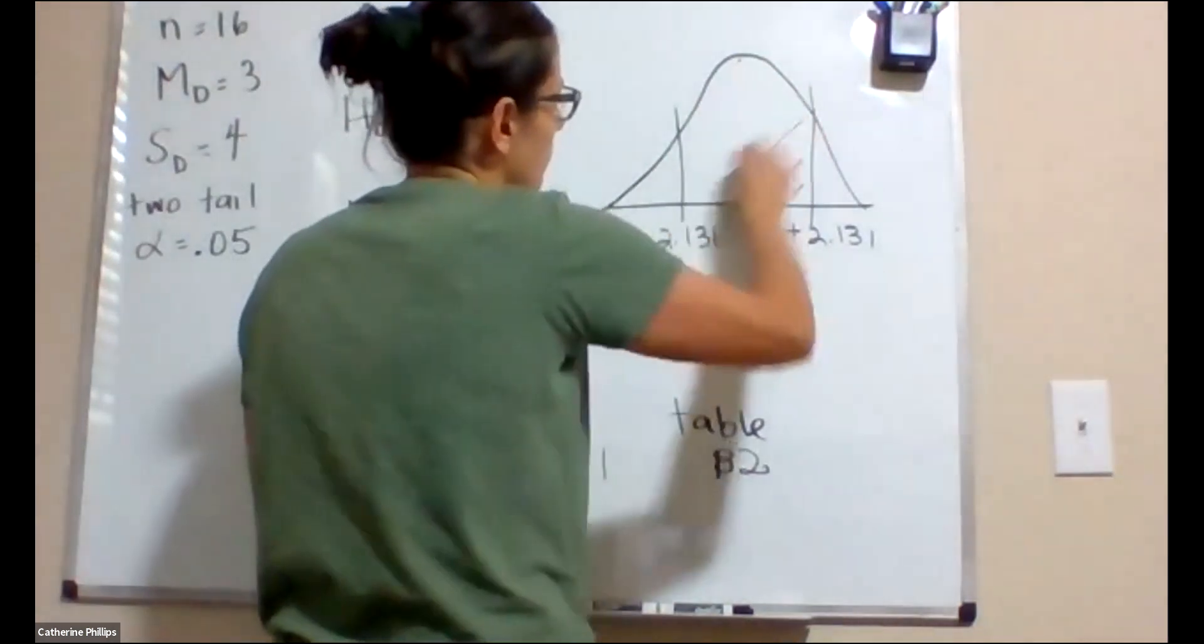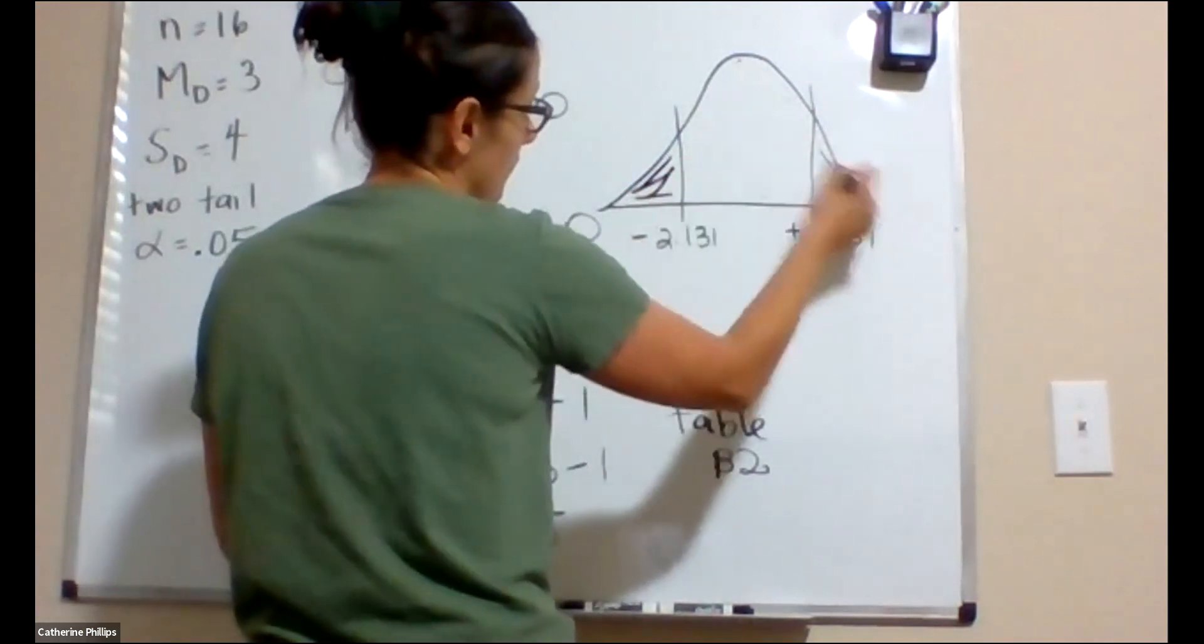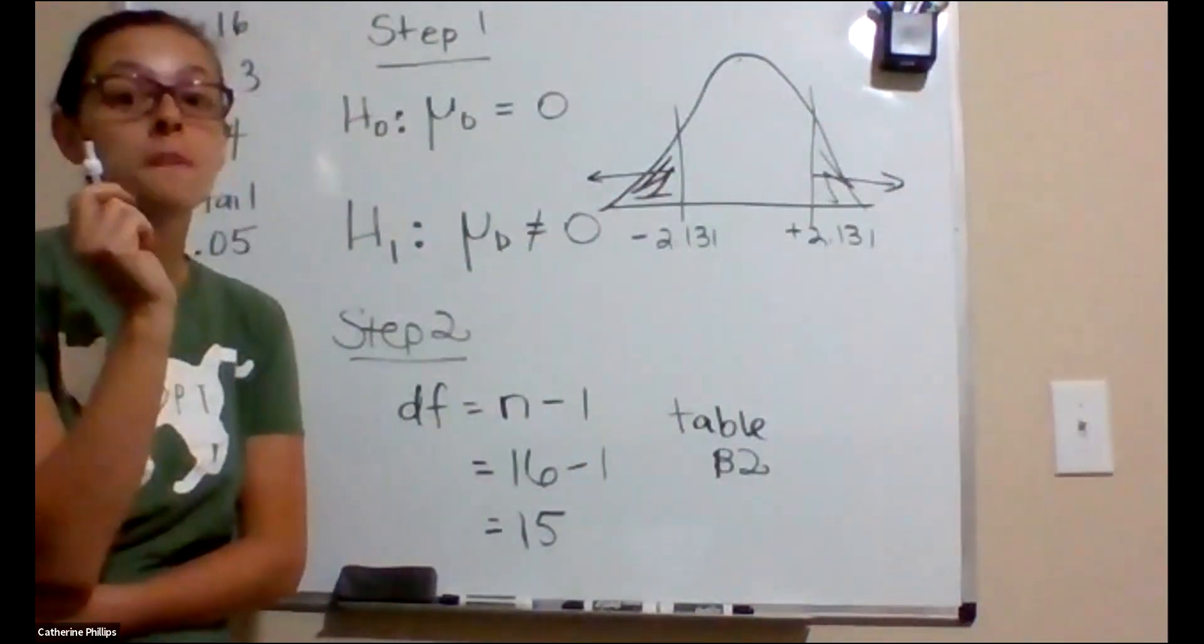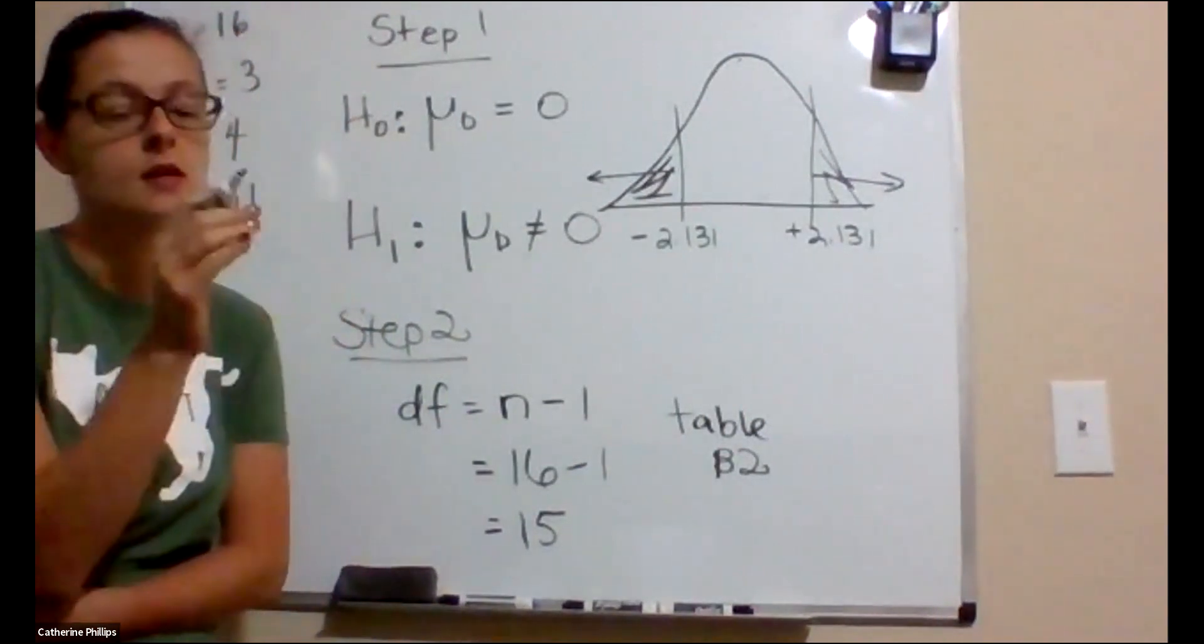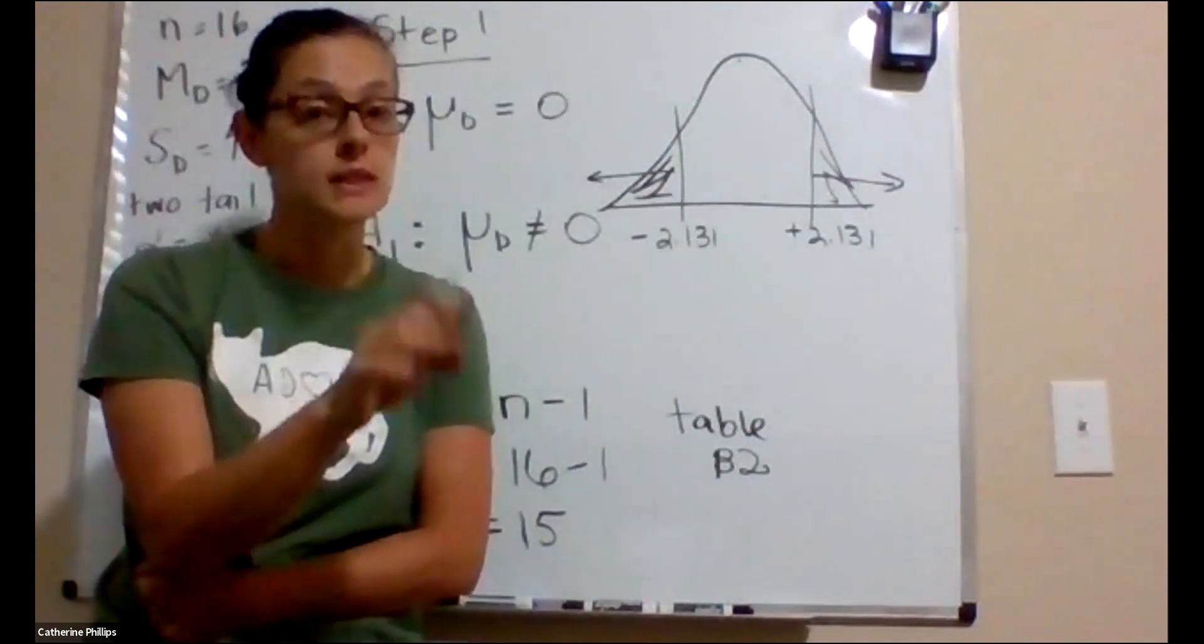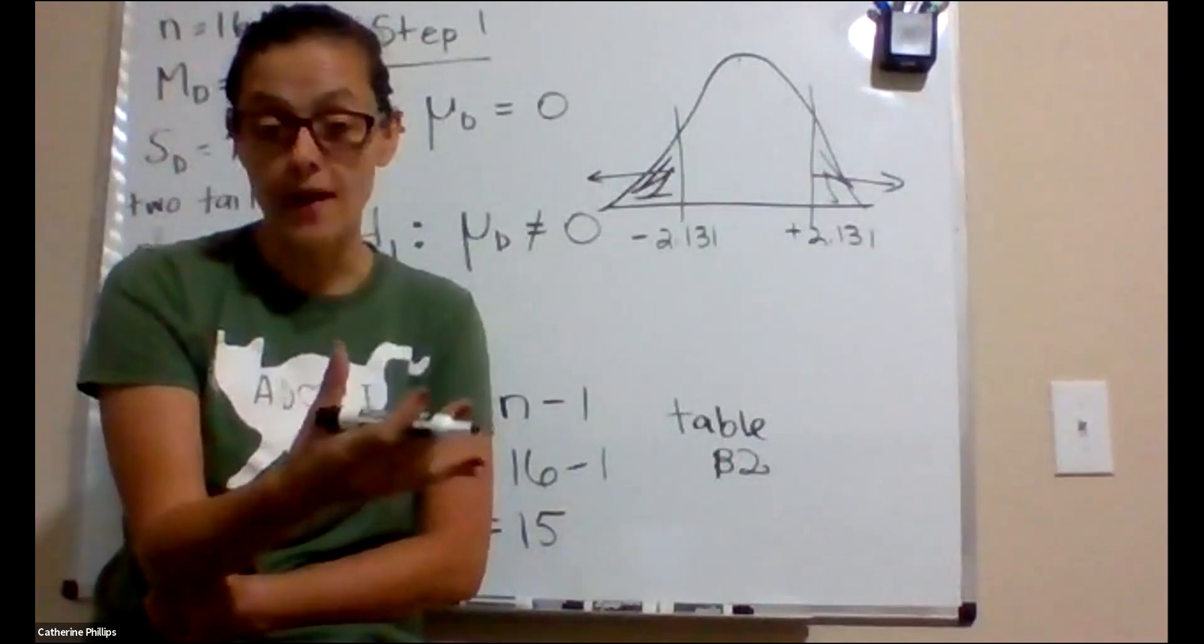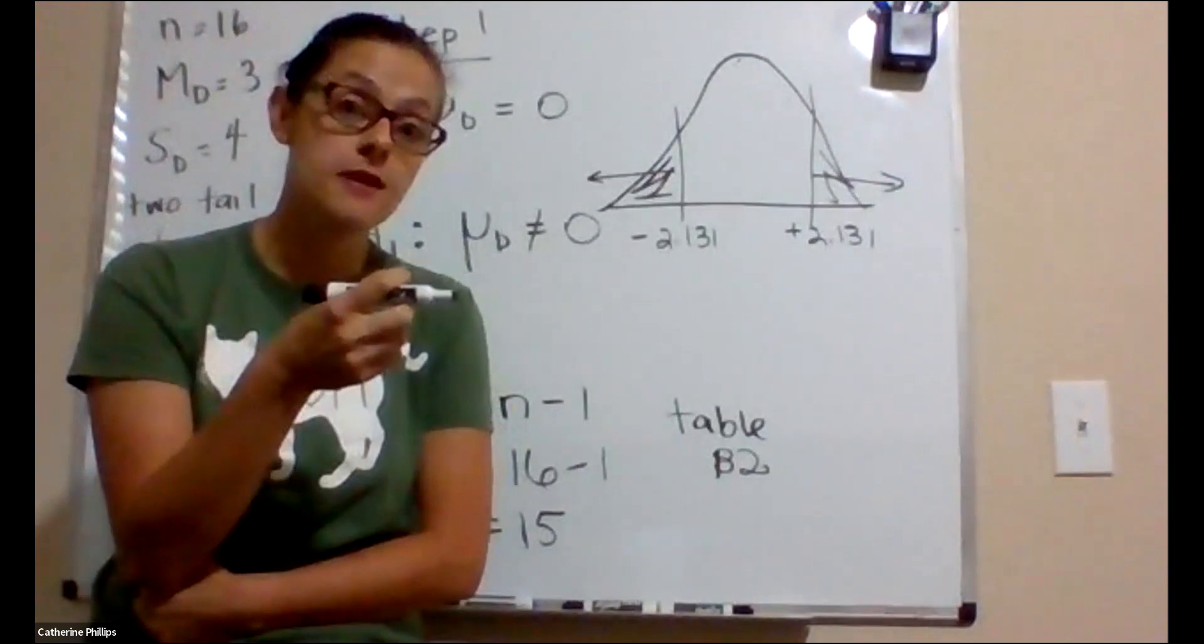If what we calculate falls in either tail, either here, out this way, or out this way, in either tail, in either direction, because it's a two-tailed test, then we are going to reject the null hypothesis and accept the alternative hypothesis. What we're saying, when we reject the null and accept the alternative, we're saying the difference that we observe is unlikely to be just due to chance, which means there is a treatment effect. It is a statistically significant difference.